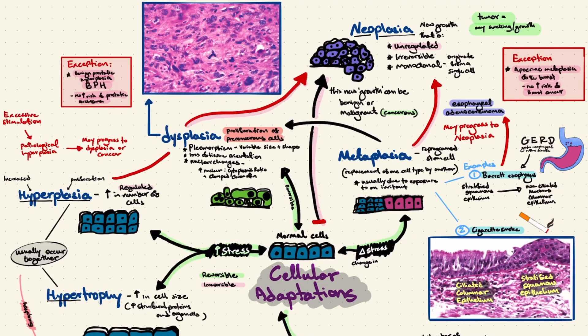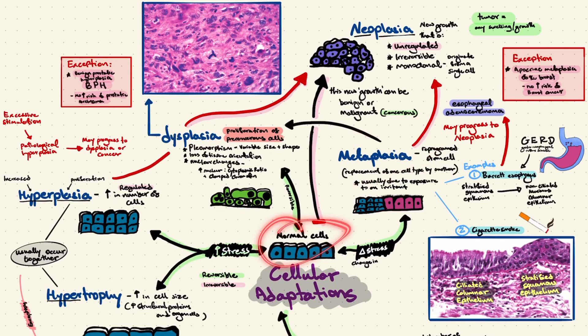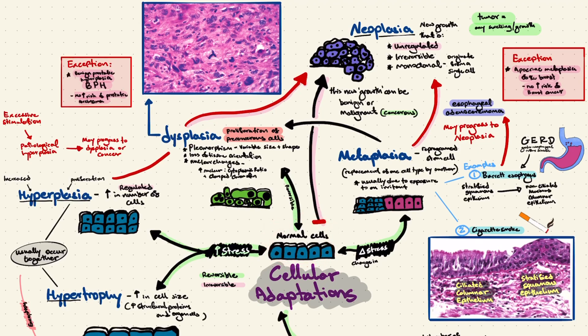Dysplasia can originate from hyperplasia, metaplasia, or even directly from normal cells. Dysplasia is pre-cancerous because it is still reversible — if you remove the stress, the cells may return to normal. However, if the stress persists, dysplasia may progress to neoplasia.